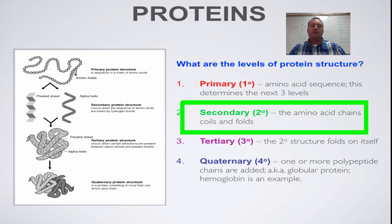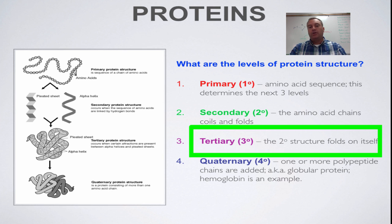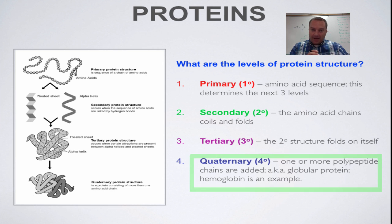The secondary structure is either coils or folds, and we'll go over those in more detail in a moment. The tertiary structure is when you take the secondary structure and fold it back and forth on itself to give it a three-dimensional shape. Then the quaternary structure is when you add a completely different polypeptide to make what is called a globular protein — which truly means a glob of protein.